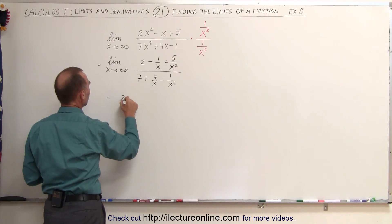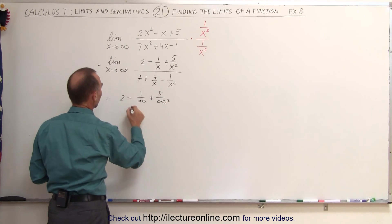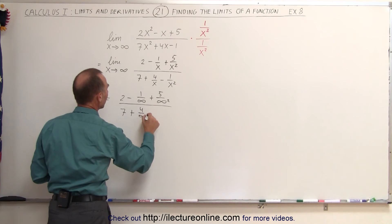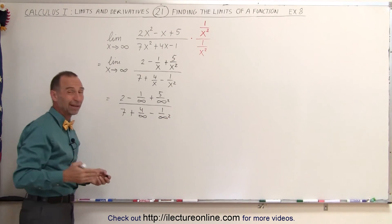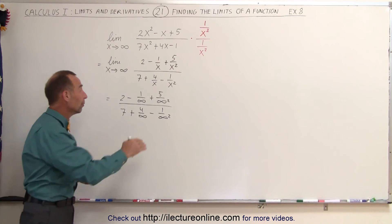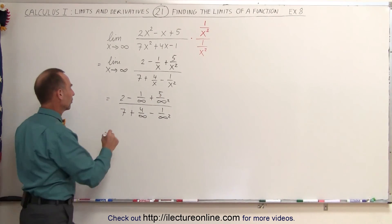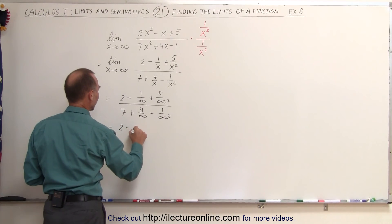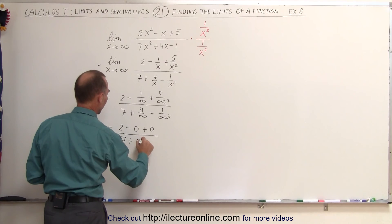So this is equal to 2 minus 1 over infinity plus 5 over infinity squared divided by 7 plus 4 over infinity minus 1 over infinity squared. And again, when we divide by infinity or infinity squared, no matter how big the number is in the numerator, that of course is equal to 0.